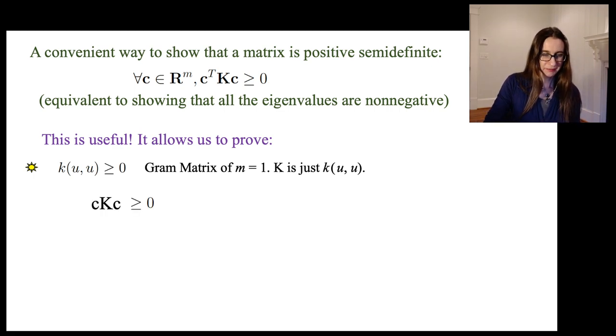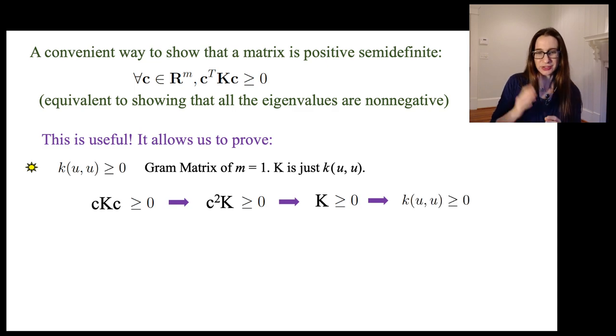That means cᵀKc is just a number at this point, right, because K is just a number, so cᵀ times K times c is greater than or equal to zero, that means c²K is greater than or equal to zero, which means that K is greater than or equal to zero, and so since K is just k(u,u), then that is also greater than or equal to zero. Great. Our norms seem to be well-defined, so that's good.